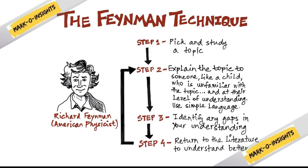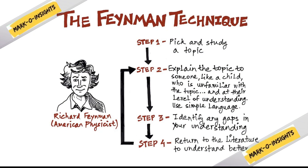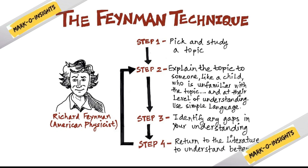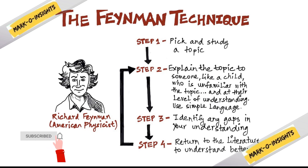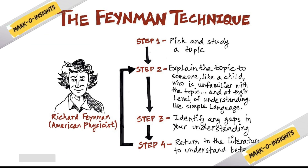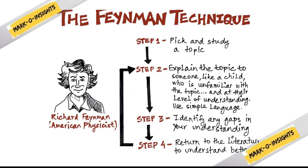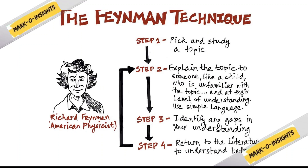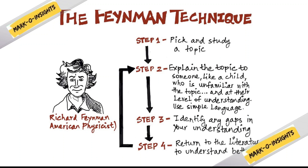Step one: pick and study a topic. Step two: explain the topic to someone like a child who is unfamiliar with the topic and at their level of understanding — use simple language. Step three: identify any gaps in your understanding. Step four: return to the literature, understand it better, and make it simpler.